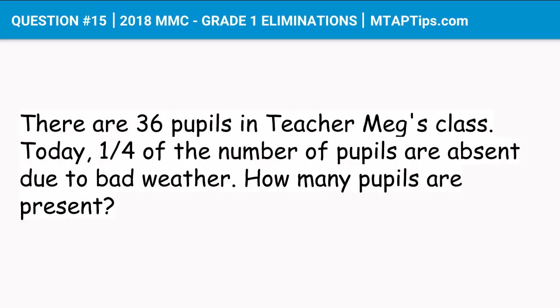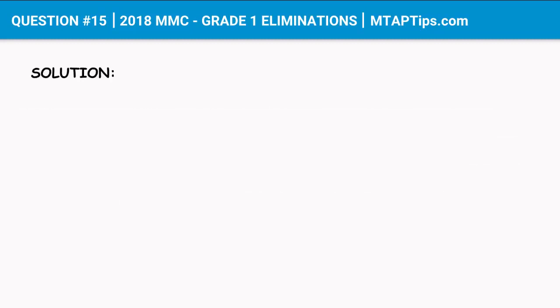Let's solve this problem by making a simple diagram first of Teacher Mag's class. We divide them into four equal parts, and one section which is 1/4 is absent. So we still got three sections of the class present. If we add 1/4 plus 1/4 plus 1/4, we get 3/4, so 3/4 of the class are still present.